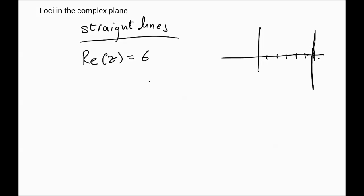First thing we look at is straight lines, the simplest of these. Straight lines occur in several ways in the complex plane. For instance, if we take the real part of the complex number z equals 6, that means that along the x-axis we're fixing the real part, but the imaginary part is allowed to vary.